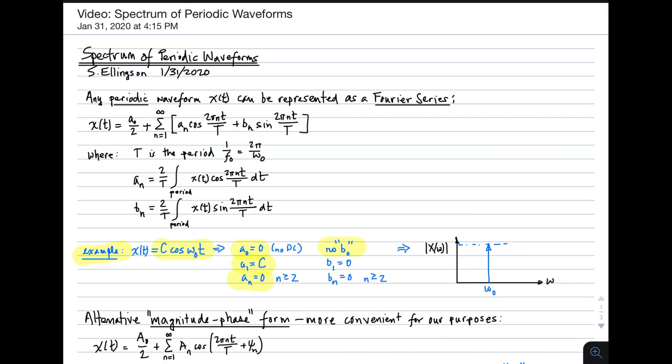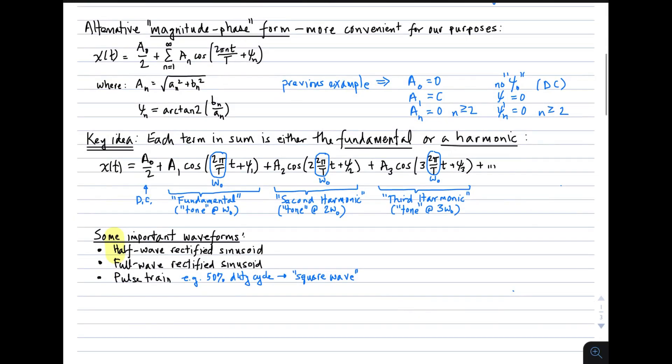b₁ is 0, and furthermore, all other values of b_n are 0. So if we look at the spectrum of that waveform, what we see is simply one component, and it's at a frequency of ω₀, as expected.